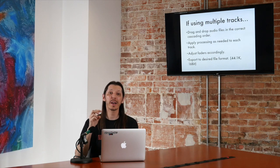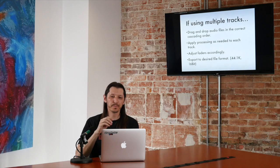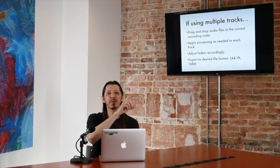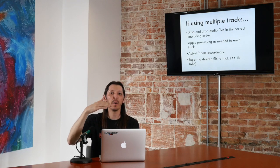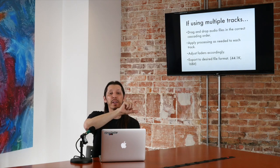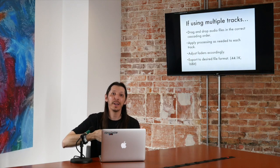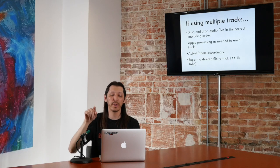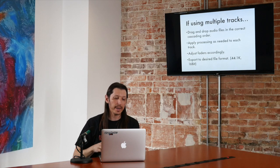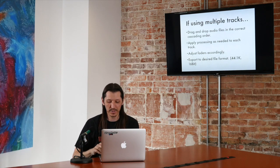If you're using multiple tracks, it's going to be a little bit different. You're going to drag and drop, but in a cascading order. Whatever's first usually starts on top, and then whatever comes next you're going to move over — you don't want them lined up in a column vertically. Then you're going to adjust the faders, do whatever processing, and then export it.